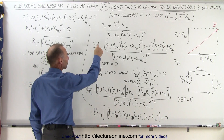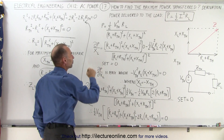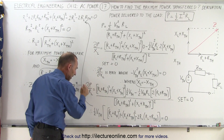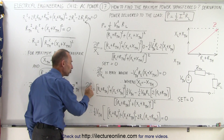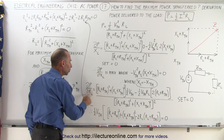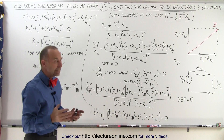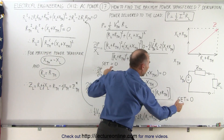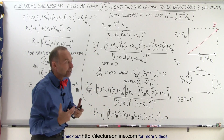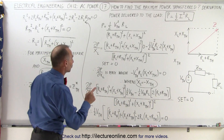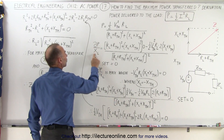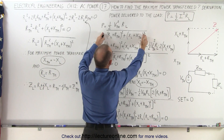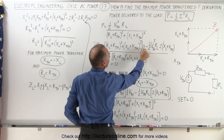Now we have an equation for power transferred to the load. We're going to take the partial derivative of that with respect to the load reactance, and then again with respect to the load resistance. In each case we set those equal to zero to find the values that give maximum power transfer. First, we take the partial derivative with respect to the load reactance using the quotient rule: the denominator times the derivative of the numerator minus the numerator times the derivative of the denominator.